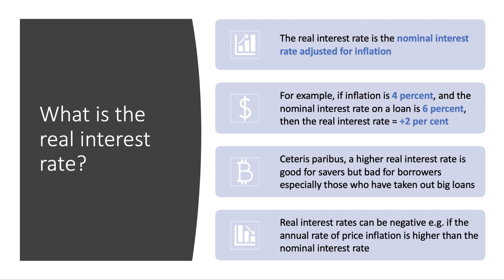Ceteris paribus — all other factors held constant — a higher real interest rate is good for savers because the return they're getting is better than inflation, but not so good for borrowers, particularly highly leveraged borrowers who've perhaps taken out a very big mortgage relative to their incomes.